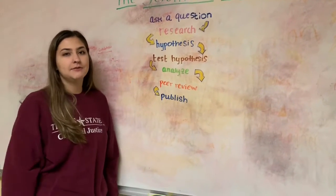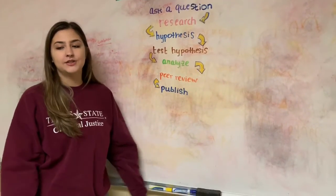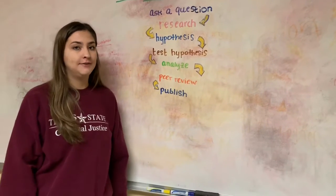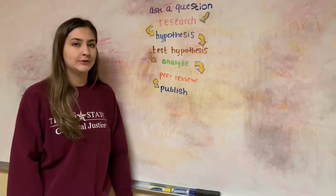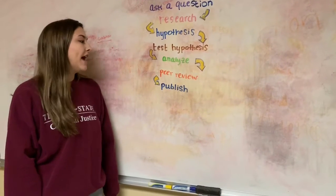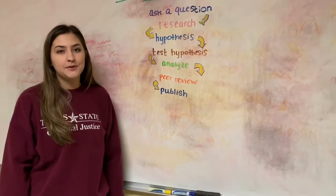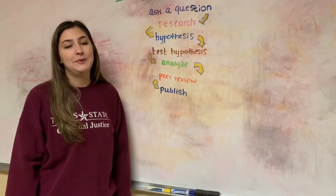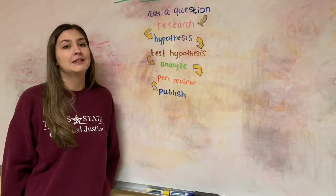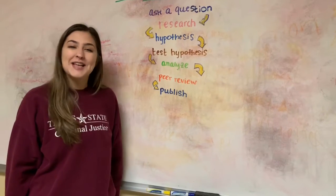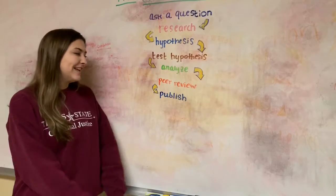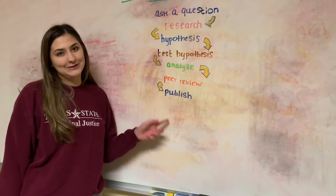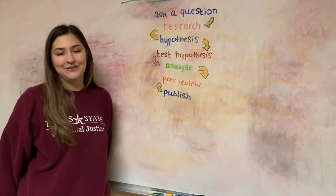We poured water into plant B. After we tested our hypothesis, we analyzed the results, and we saw that the plant watered with water thrived better in its natural environment. After that, we had our peers review our findings to make sure they were factual and that we did, in fact, follow the scientific method. After that, we published an article to our scientific journal.